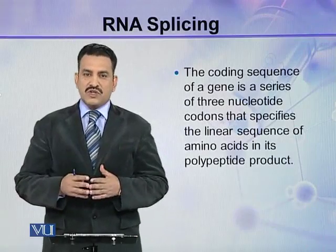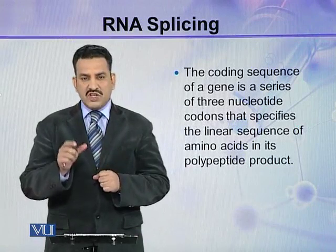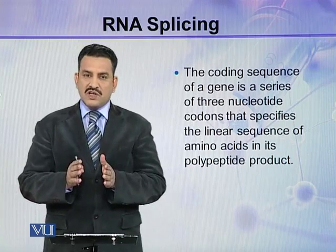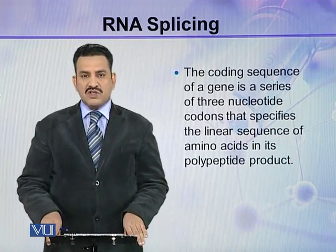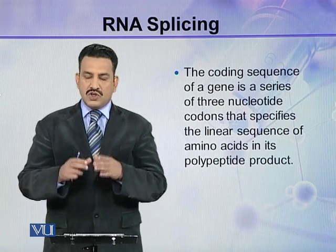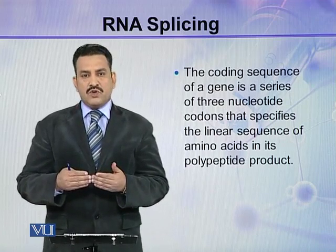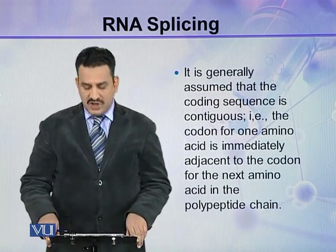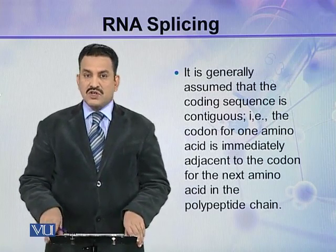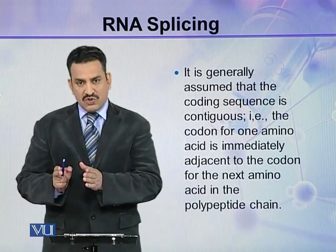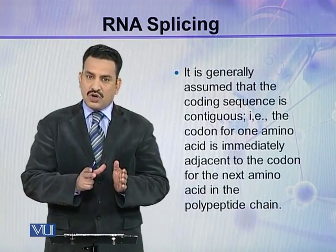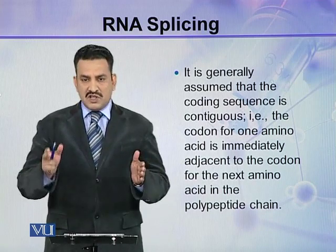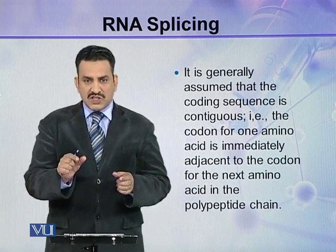The coding sequence of a gene is a series of three-nucleotide codons, and these codons specify the sequence of amino acids in its polypeptide product. So the sequence of a gene, which is in the form of codons, is translated into the sequence of amino acids. It is generally assumed that the coding sequence is contiguous — the codon for one amino acid is immediately adjacent to the next, without any space in between.